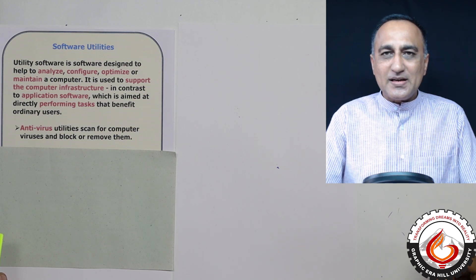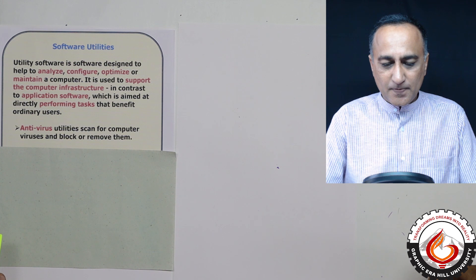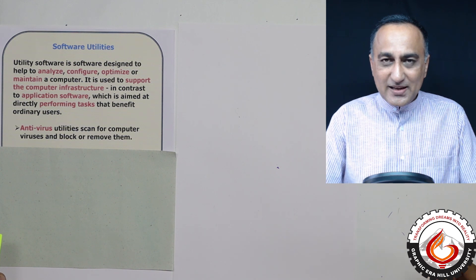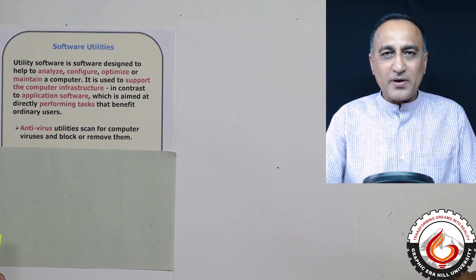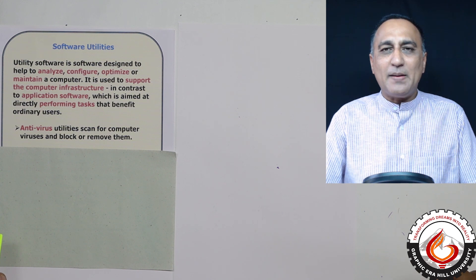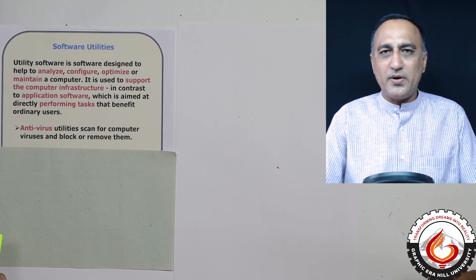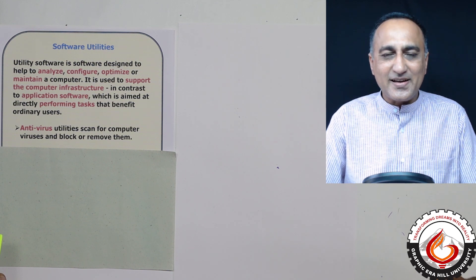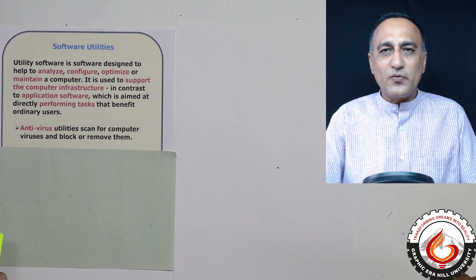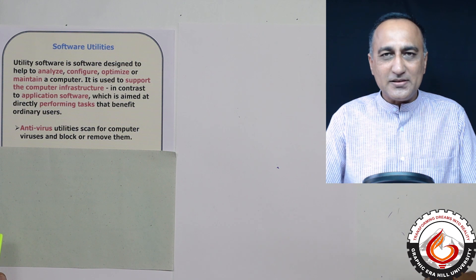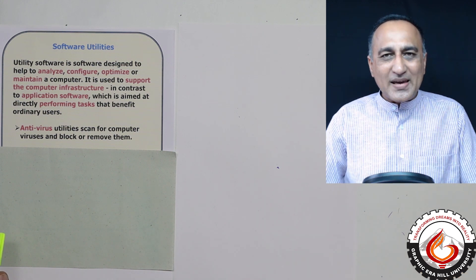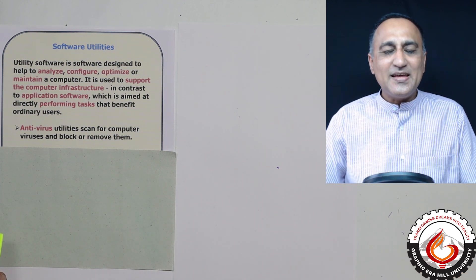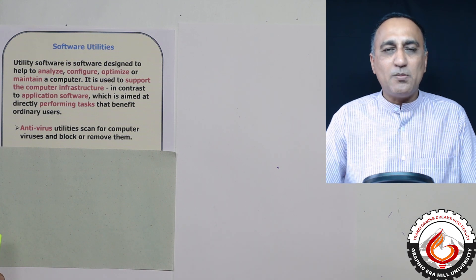We had spoken about system software and application software. There is another group of software which is very closely related to the application software, but it really does not come under the application software classification very strictly. These are known as software utilities. Let me first give you examples of software utilities, then you will easily understand what I'm talking about.